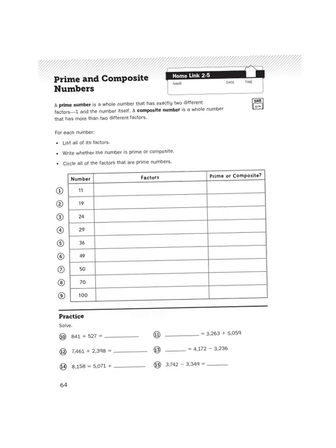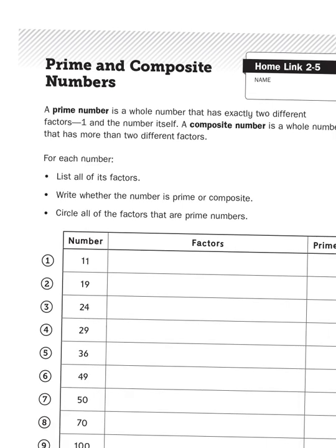Before we get started, let's define what a prime number is. Prime numbers are whole numbers that have exactly two different factors—one and the number itself. So whole numbers with just two factors. If it's got more than two factors, it makes it composite.